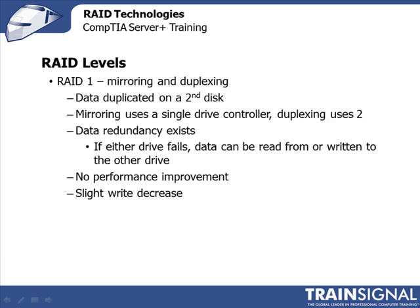Our next RAID level is RAID 1, and it's called Mirroring and Duplexing. With this level, data is actually duplicated on a second disk. The mirroring option uses a single-drive controller, while Duplexing uses two, and is probably implemented less often. Unlike RAID 0, RAID 1 does feature data redundancy, so that if either drive fails, data can be read or written to the other drive.